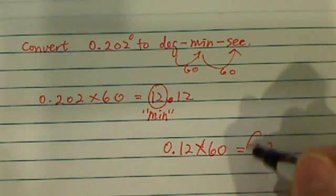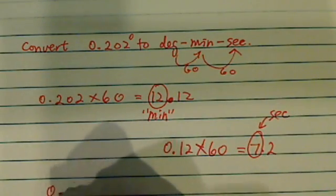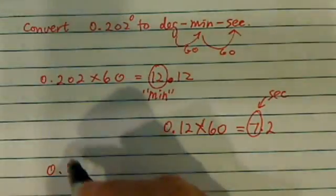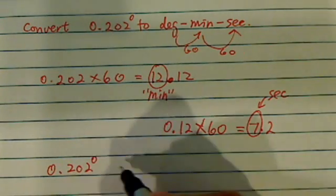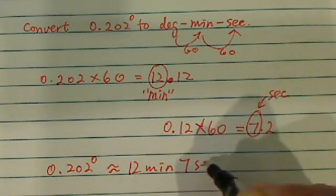This one, 7 is my second here. So from here we have 0.202 degrees is roughly equal to 12 minutes and 7 seconds.